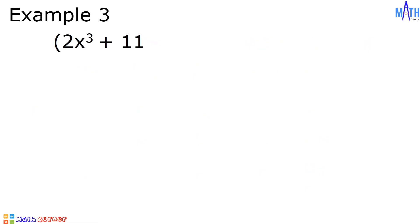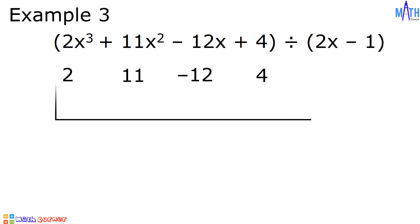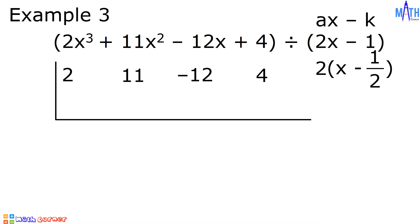Last example: divide 2x cubed plus 11x squared minus 12x plus 4 by 2x minus 1. In this example, the dividend and the divisor are already expressed in descending powers of the variable. The leading coefficient of the divisor is 2, and the divisor is of the form Ax minus k, where A is greater than 1. If we factor out 2 from 2x minus 1, we are left with x minus 1 half. So k is equal to 1 half. Let us write 1 half on the left side and perform synthetic division.